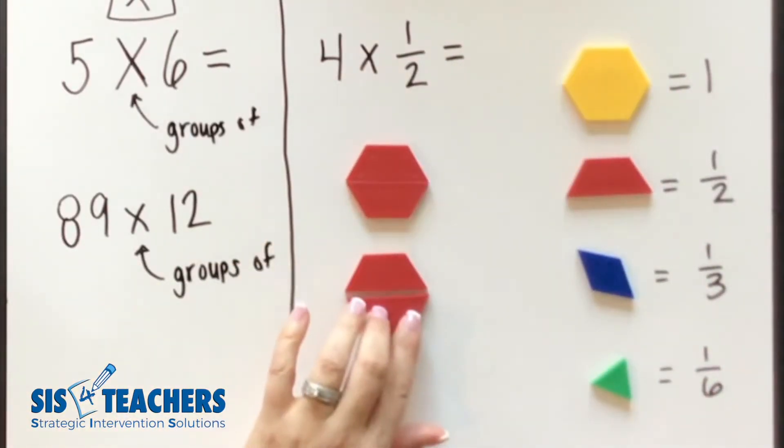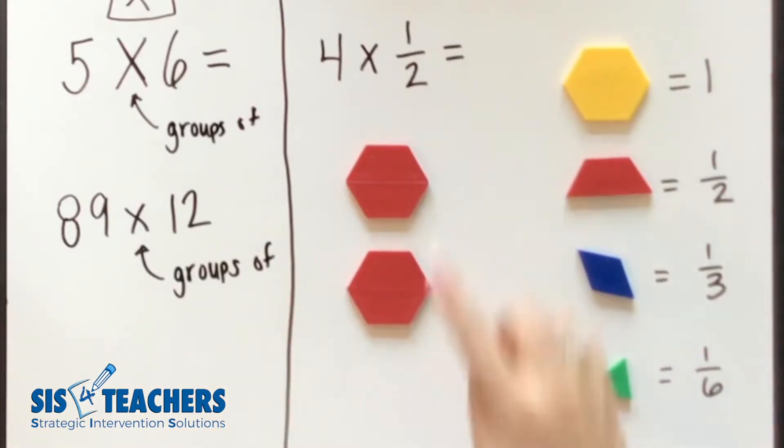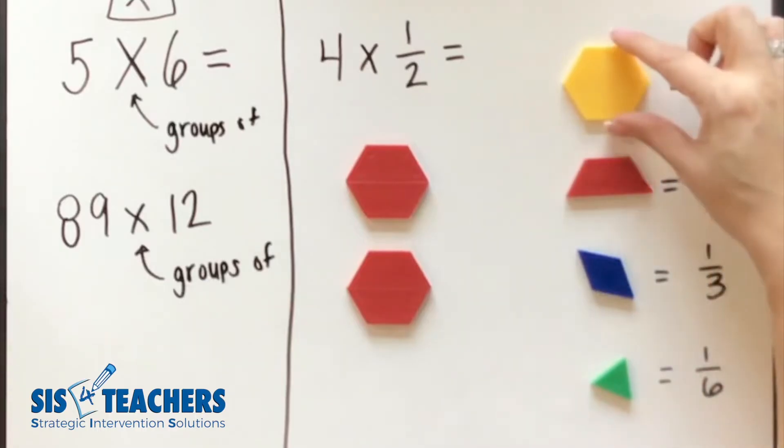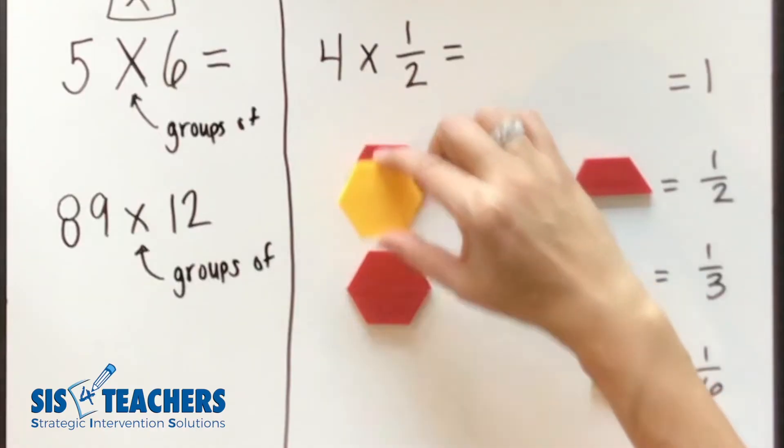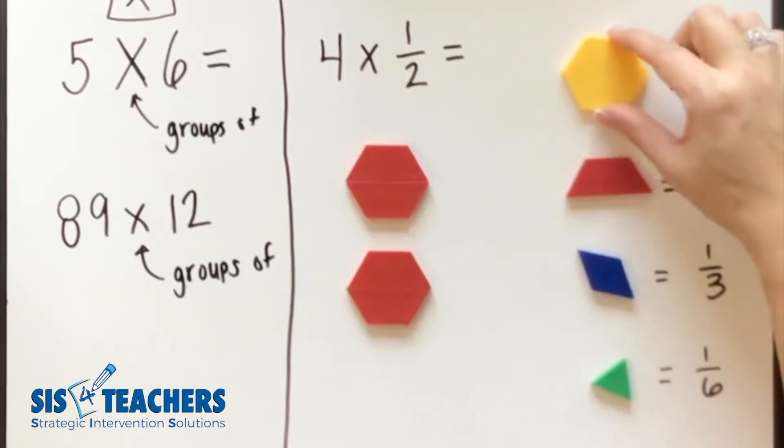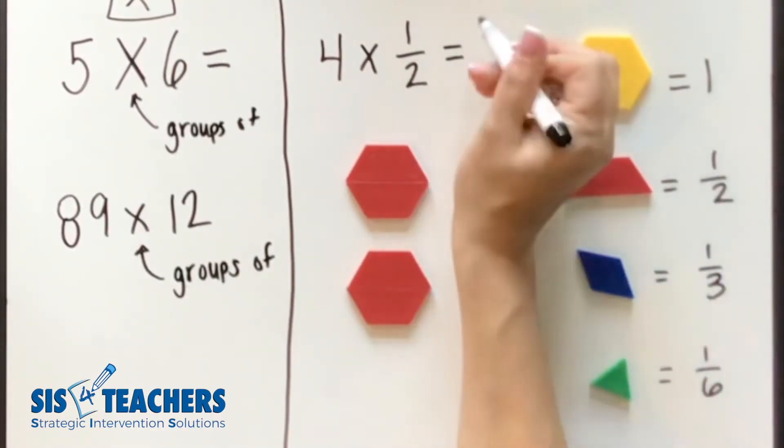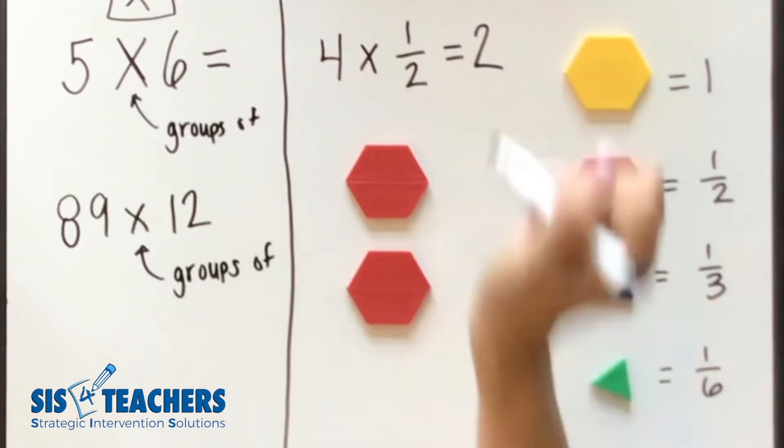When we total this, we want to figure out how much is it related to the whole that we're talking about. We can lay on top the hexagon on top of the trapezoids to see that when we have four halves, we note that it's equal to two.